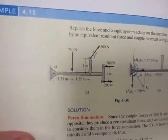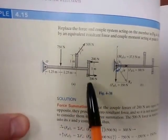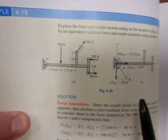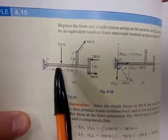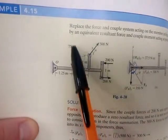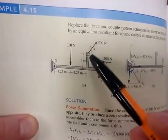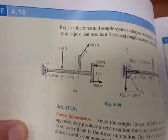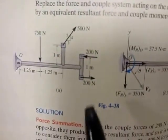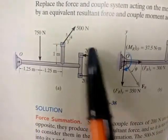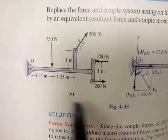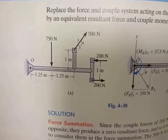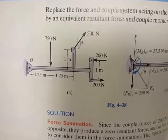Example 4.15 in the 14th edition. We have this interesting looking structure with these pipes, and we've got a bunch of forces and couples acting on it. We have a 750 Newton force acting down at a certain distance, a 500 Newton force acting there, and a couple of 200 in each direction. We are in section 4.7, which is the simplification of a force and couple system.